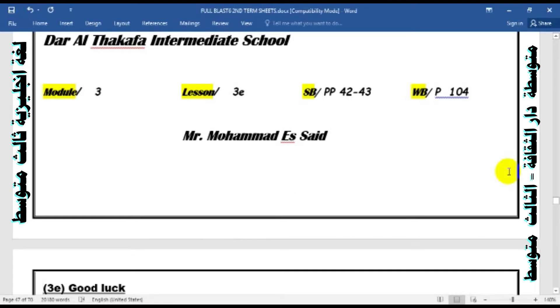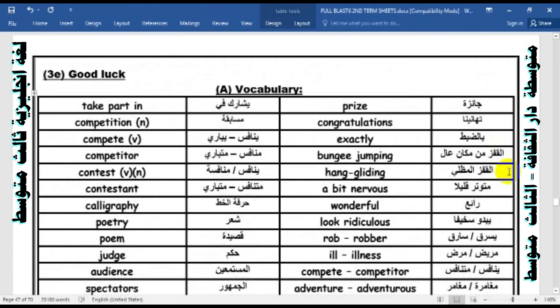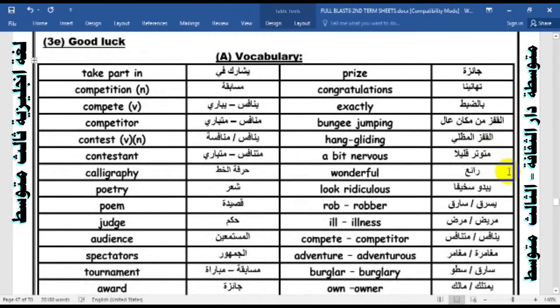String book pages 42 and 43, workbook page 104. Let's start. 3E, the title is Good Luck. At first, let's read the new words. Try to repeat it for me.